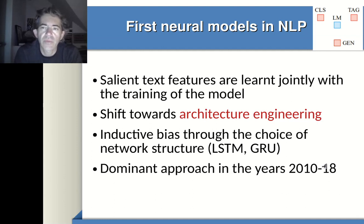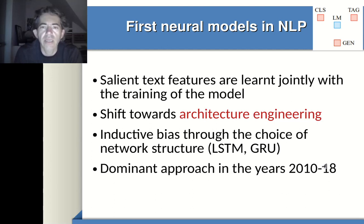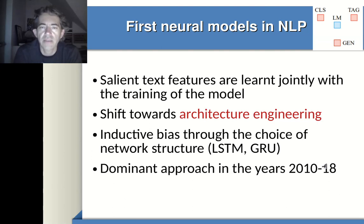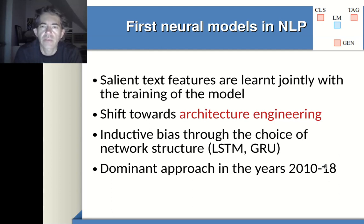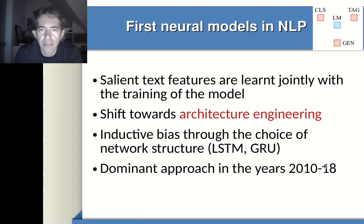By architecture engineering, because we understand that text classification is different from sequence tagging, which is different from text generation, for each general task we would come up with a clever model. For sequence tagging depending on larger context, we would use recurrent neural networks — specifically LSTMs — because they had the ability to remember important elements with trainable parameters. By putting in more data, we could discover larger relationships between words or tokens. LSTMs, GRUs — that was the approach between 2010 and 2018.